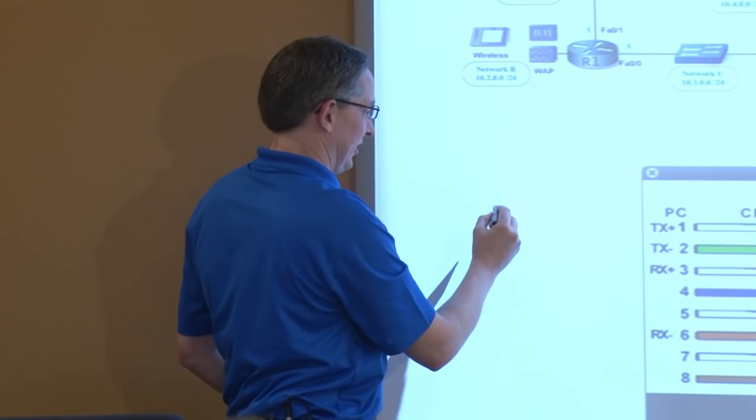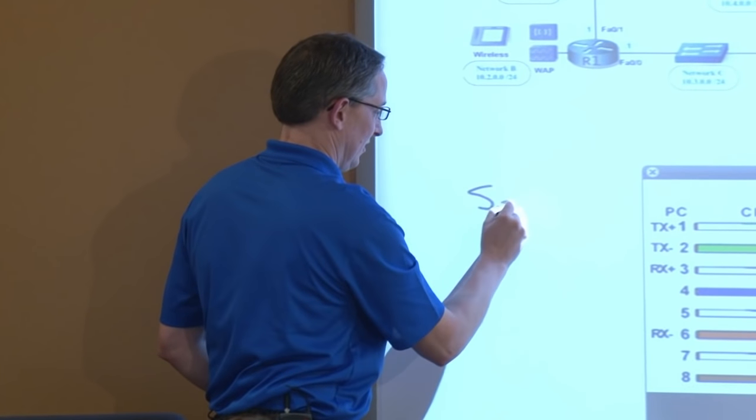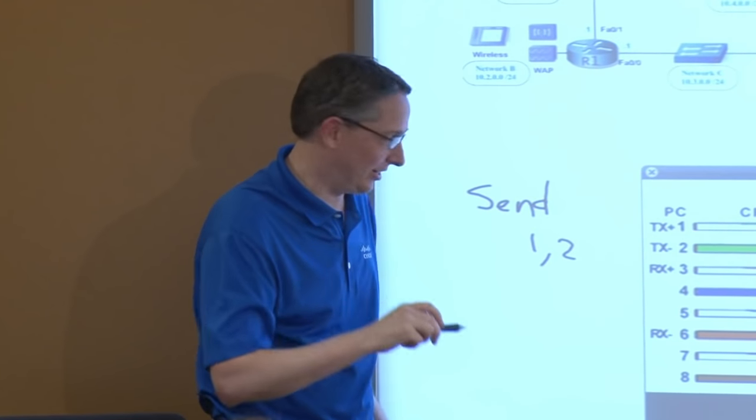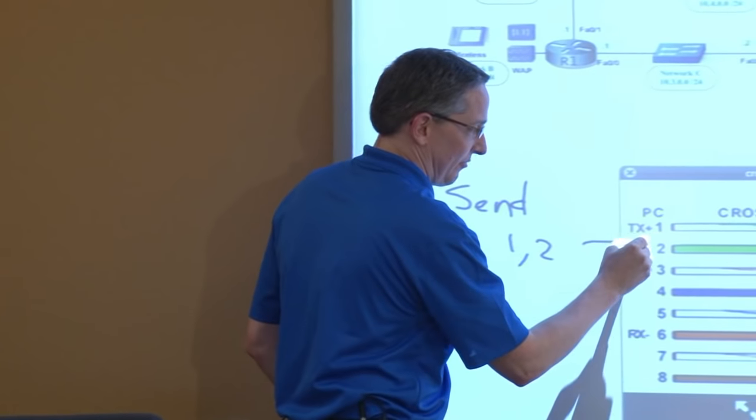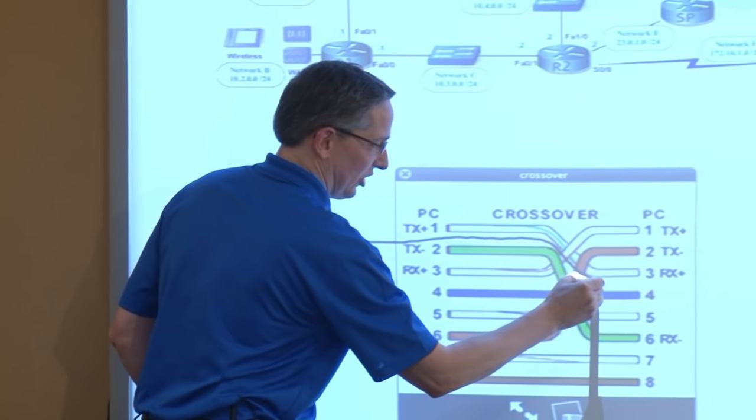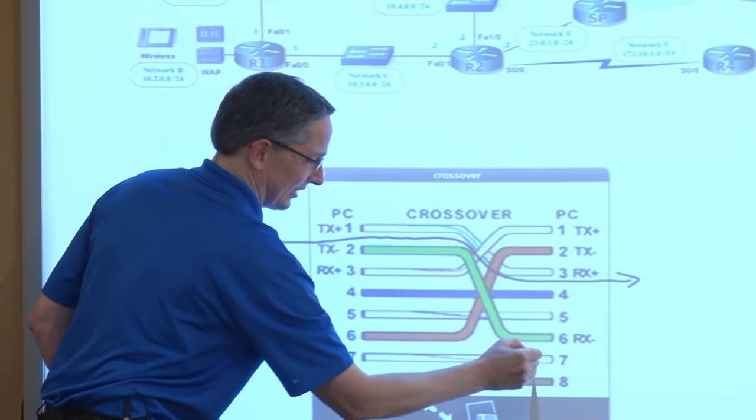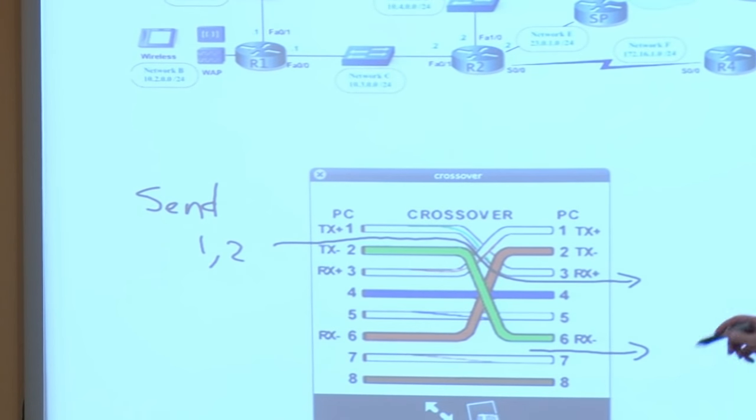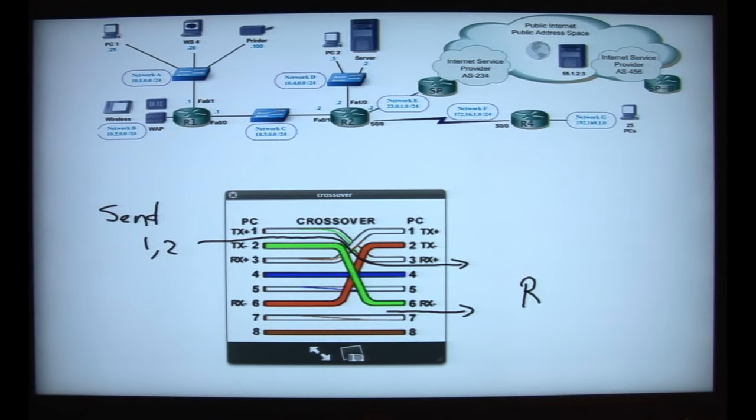So what we're going to do is this PC on the left here is trying to send on pins one and two, and let's follow the action here. If I send on this pair of pins, it crosses over, and it comes out on three and six. Isn't that beautiful? No problem whatsoever, and the good news is this guy is receiving, by default, on pins three and six.